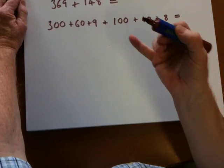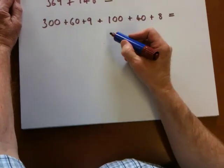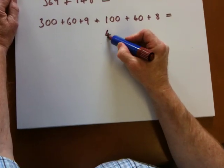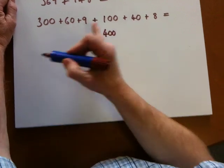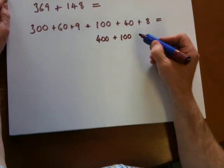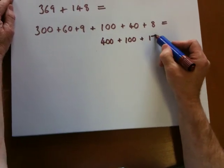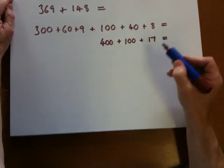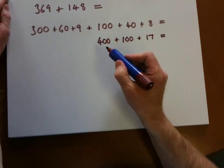Then they could be asked to put the hundreds together. So 300 and 100 makes 400, 60 and 40 makes 100, 9 add 8 makes 17, and then combine them together.